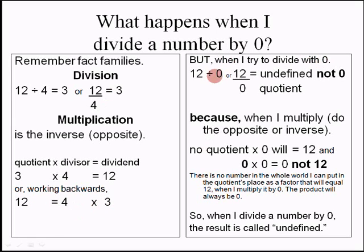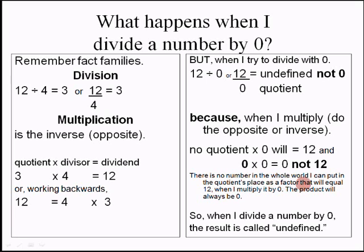But when I try to divide with 0 — 12 divided by 0 equals undefined, not 0. It is undefined because when I do the opposite operation, no quotient times 0 will equal 12. Zero times any number is going to be 0, not 12. So the reverse is not possible — there is no number in the whole world I can put in the quotient place that, when multiplied by 0, will give 12. The product will always be 0.